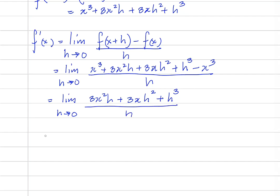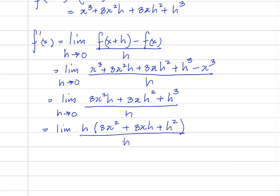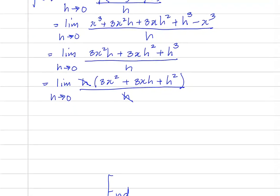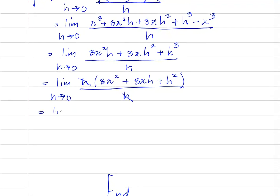So if you divide both numerator and denominator by h — or if you want, you could factor out the h and then cancel them — we have 3x squared plus 3x h plus h squared over h, as h approaches 0. So this becomes the limit as h approaches 0 of 3x squared plus 3x h plus h squared.